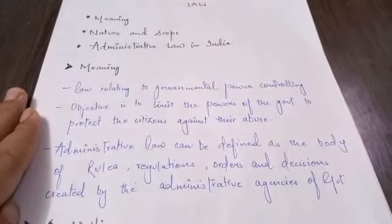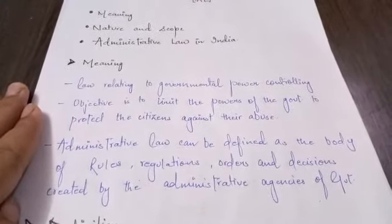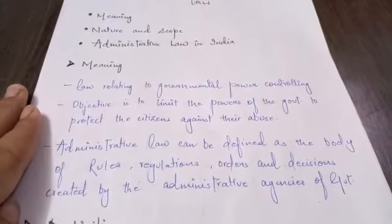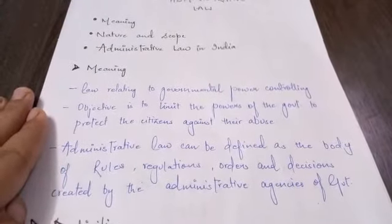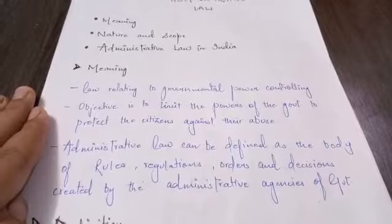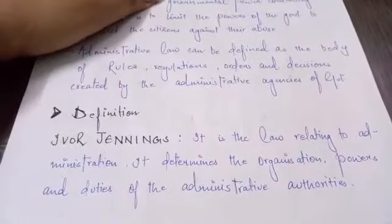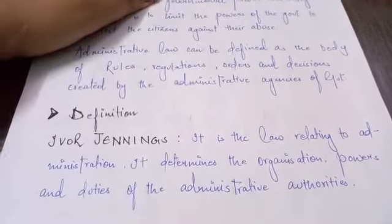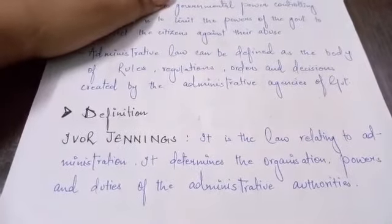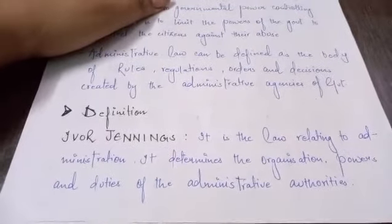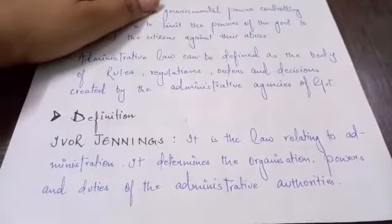That is the definition of administrative law. The crux is that governmental authorities should not abuse their power — that is what administrative law propounds. We will now see two very important authorities' definitions. First, Ivor Jennings has said: 'Administrative law is the law relating to administration. It determines the organization, powers, and duties of the administrative authorities.'